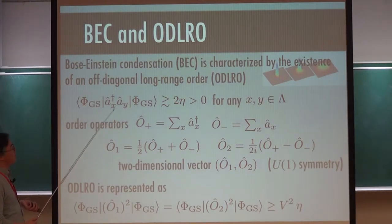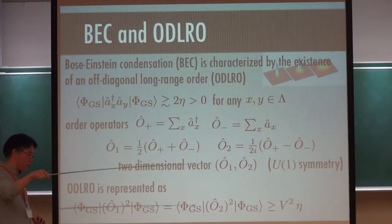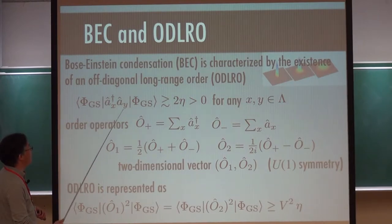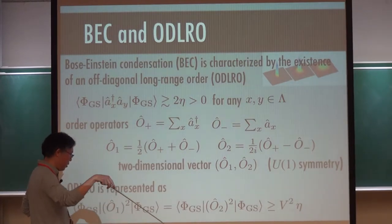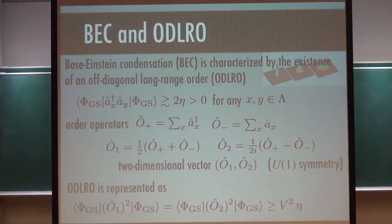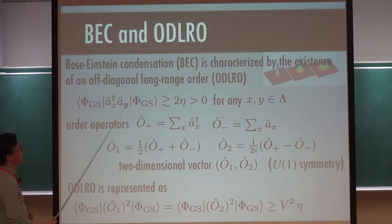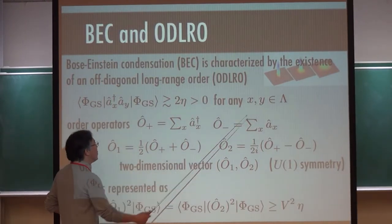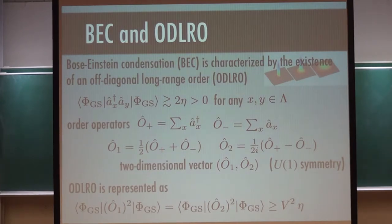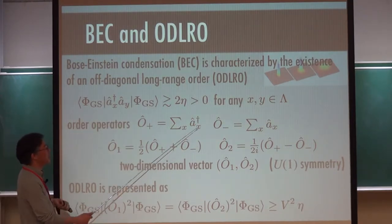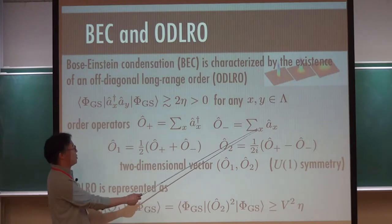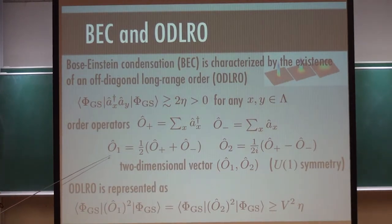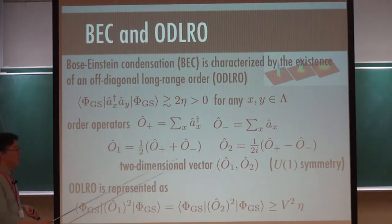Off-diagonal long-range order is a kind of long-range order measured by a two-point function. You annihilate a boson at site Y and create a boson at site X, and if this expectation value does not vanish when X and Y are very far apart, you say there is off-diagonal long-range order. To measure this, it's nice to introduce O plus as the sum of creation operators and O minus as the sum of annihilation operators.